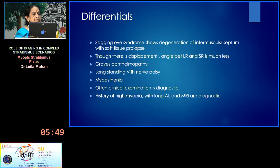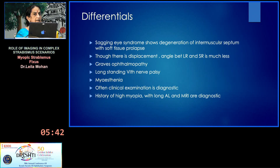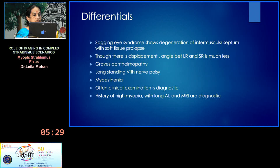The differentials include sagging eye syndrome, as shown by Dr. Angushri — there is degeneration of the intermuscular septum and soft tissue prolapse there, including the lacrimal gland, but no prolapse of the globe. Graves' ophthalmopathy is another condition to be differentiated, of course by imaging and history. Long-standing sixth nerve palsy sometimes confuses us, especially when bilateral.